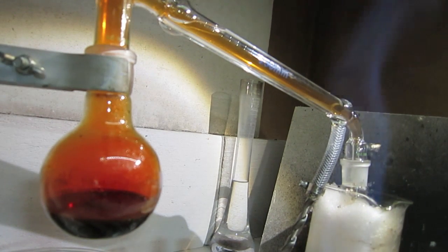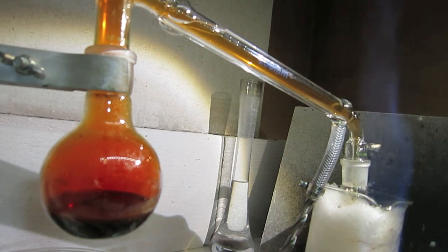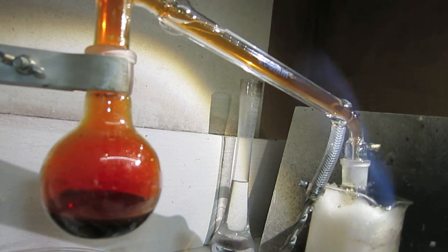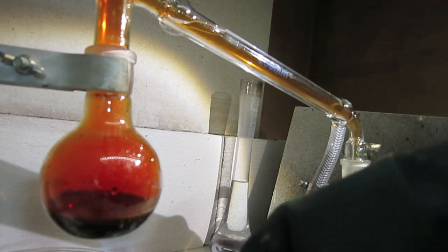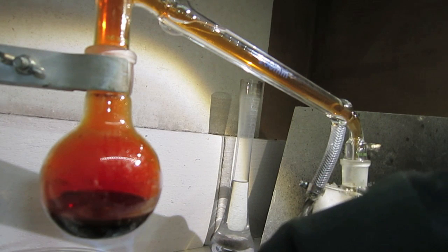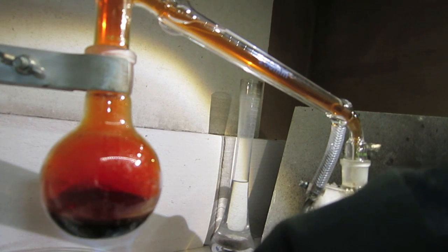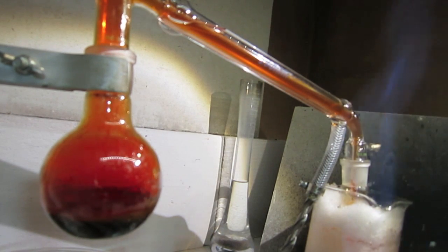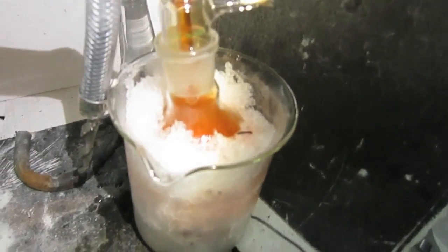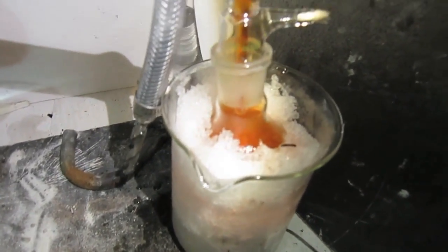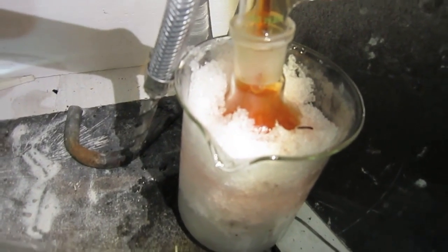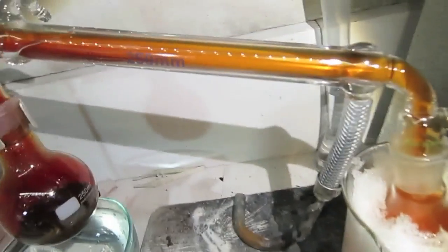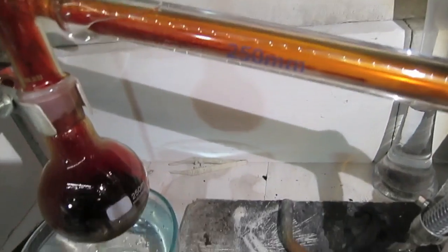So now the vapor is appearing. At the other end, bromine is appearing in the ice-cold receiver. I hope it's condensing enough. Yes, I see in the tube here there is some bromine liquid.